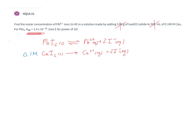We can figure out how much iodide we have from calcium iodide using stoichiometry. For every one molecule of calcium iodide that ionizes, we get two iodide ions in solution. So: 0.1 molar calcium iodide times two gives us 0.2 molar iodide in solution.